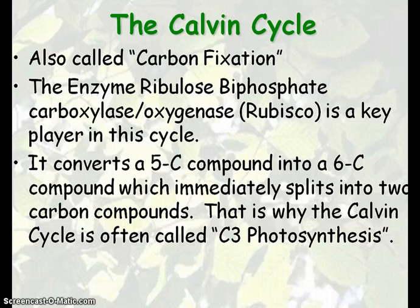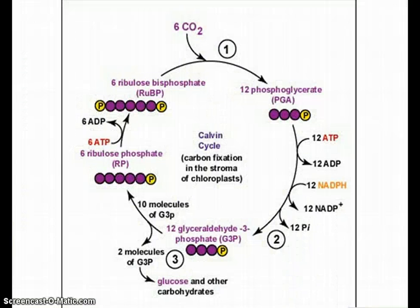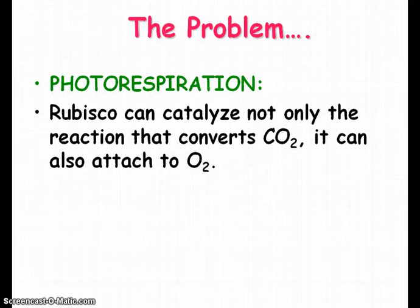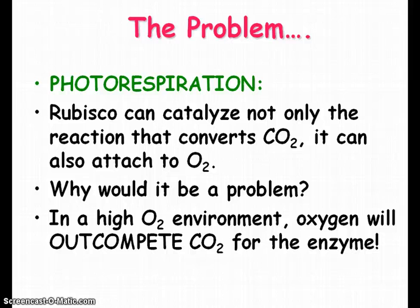Why do we mention rubisco? Because this enzyme is actually a problem — photorespiration. The cycle turns six times; six CO2s go in and we get our sugar. But rubisco is supposed to attach to carbon dioxide and take it to the next step in the cycle. Unfortunately, rubisco is also attracted to oxygen — sort of like competitive inhibition. It's an enzyme attracted to two things that can fit its active site. If there's a lot of oxygen in the environment, it's going to attach to oxygen more of the time than to carbon dioxide, meaning no photosynthesis and no sugar production. That's called photorespiration, because it's taking in oxygen instead.